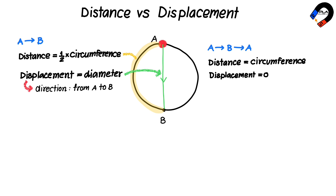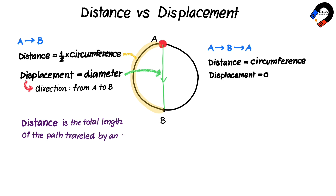Therefore, we can deduce that distance is the total length of the path traveled by an object. Distance is a scalar quantity, which means that it has only magnitude and no direction. Its unit is meter.